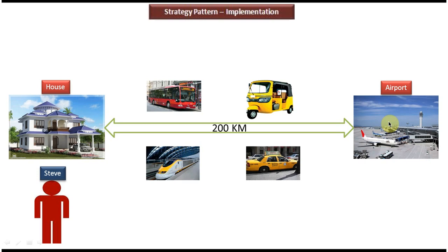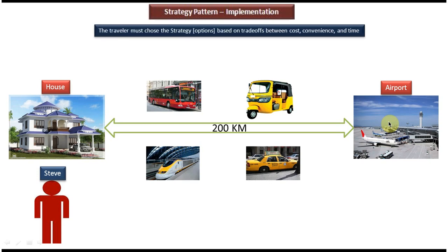As per strategy design pattern, for a particular task there will be multiple solutions. The client has to choose one solution at runtime. Here, to go to the airport Steve has four options and he has to choose one based on cost, convenience, and time. This is the best example of strategy design pattern.